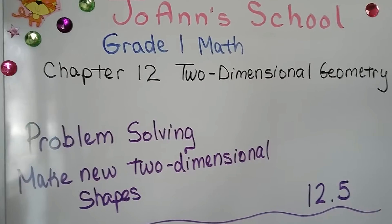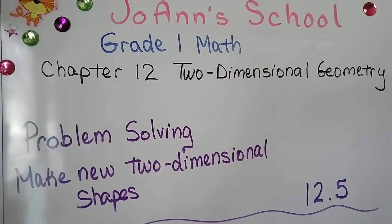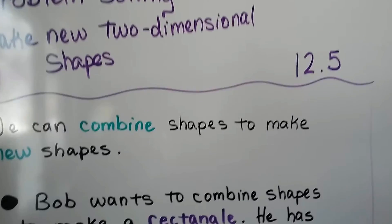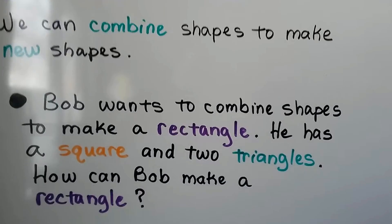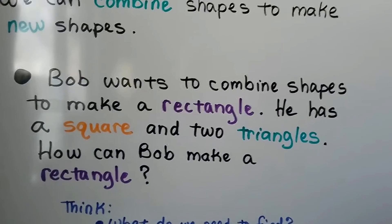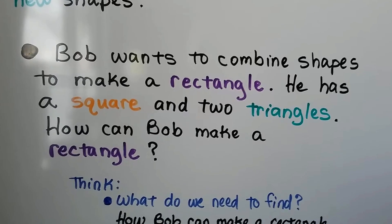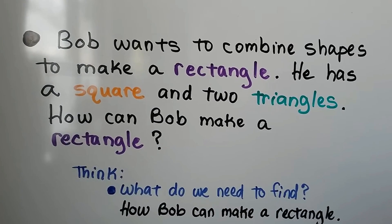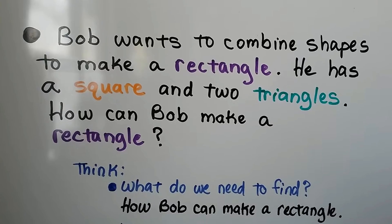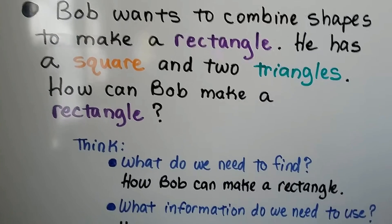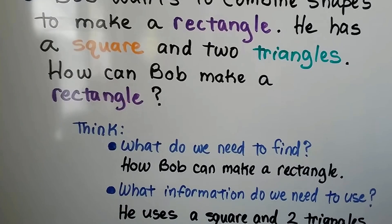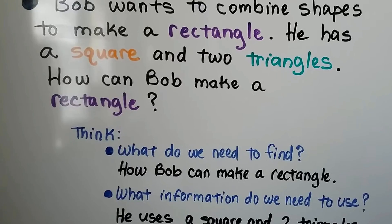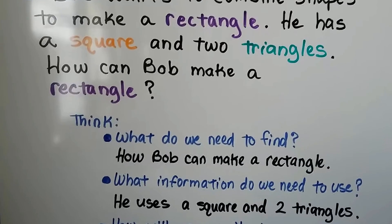Problem solving: make new two-dimensional shapes. We can combine shapes to make new shapes. Bob wants to combine shapes to make a rectangle. So we think — what do we need to find? We need to find how Bob can make a rectangle.